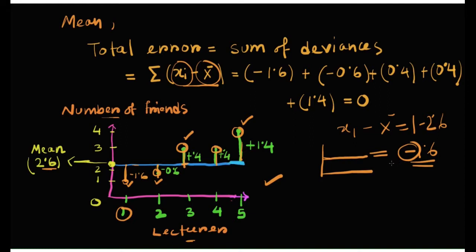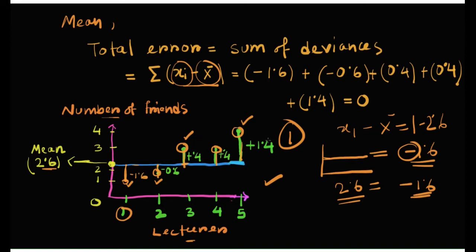This negative deviation represents the fact that our model overestimates lecturer 1's popularity. The mean predicts each lecturer will have 2.6 friends on average, but in reality lecturer 1 has only one friend. So minus 1.6 is the overestimation — in other words, our model makes lecturer 1 over-popular in the friend circle. It predicts 2.6 friends yet in reality he has only one.